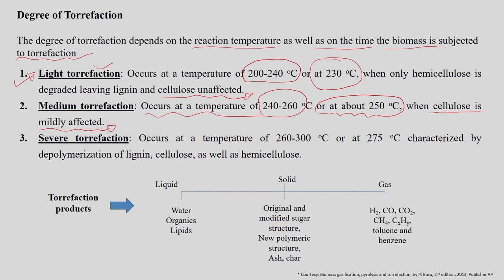The severe torrefaction process occurs at a temperature between 260 to 300°C — specifically around 275°C. It is characterized by depolymerization of the lignin, cellulose, as well as the hemicellulose fraction of the biomass. That is why the narrow temperature range of torrefaction is very crucial to obtain an efficient quality solid product.